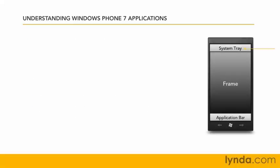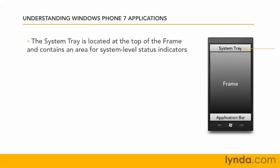The system tray and the application bar are areas at the top and bottom of the frame that you don't have access to when drawing your content — those are managed by the system. The system tray is located at the top of the frame, and that's where you see system-level status indicators common to most phones, like signal strength, battery strength, and the time.